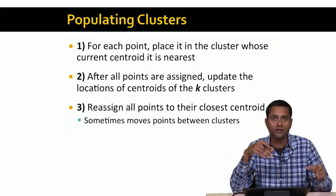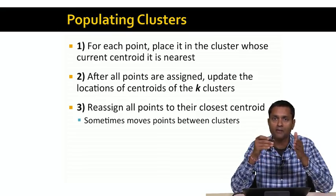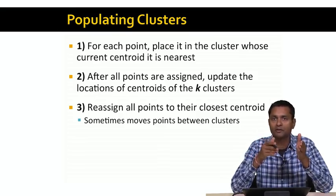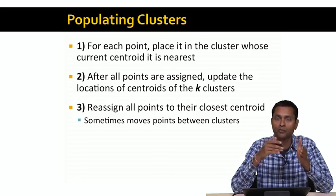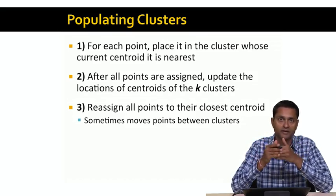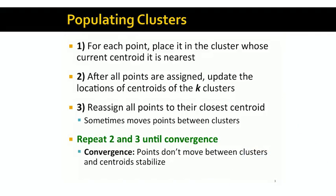So we're going to update the locations of the centroids of each of the k clusters by taking into account the new data points that have been added. Once we do this, we'll find that the centroids of the k clusters have moved, and now a point that was close to one cluster might be closer to another cluster. So we're going to go through and reassign all points to their closest centroid — sometimes this moves points between clusters. We repeat steps two and three until convergence, meaning the k centroids don't move any further and the points don't move further across the centroids. At that point, we have a stable k-means clustering.